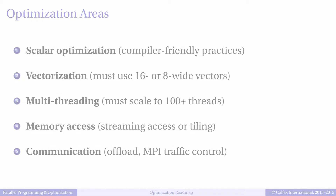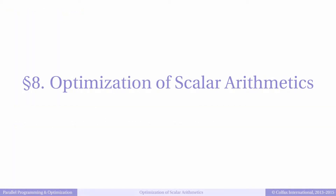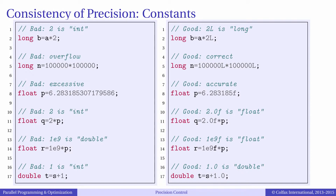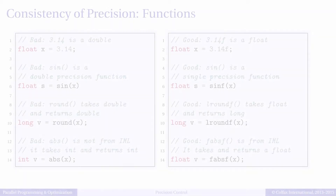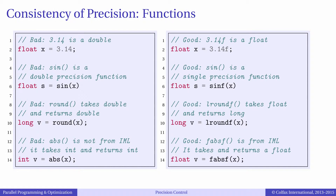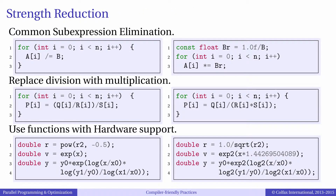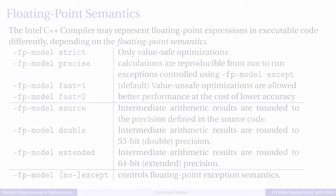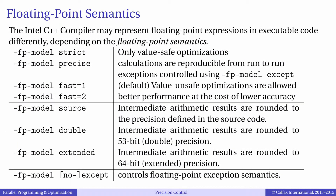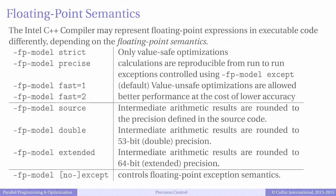Let's discuss the details. First, scalar optimization. Some applications can be improved by consistently employing single-precision floating-point arithmetic instead of double or mixed precision, removing unnecessary type conversions, eliminating common sub-expressions, applying strength reduction, using transcendental functions supported by hardware, and choosing a compromise between precision and speed.